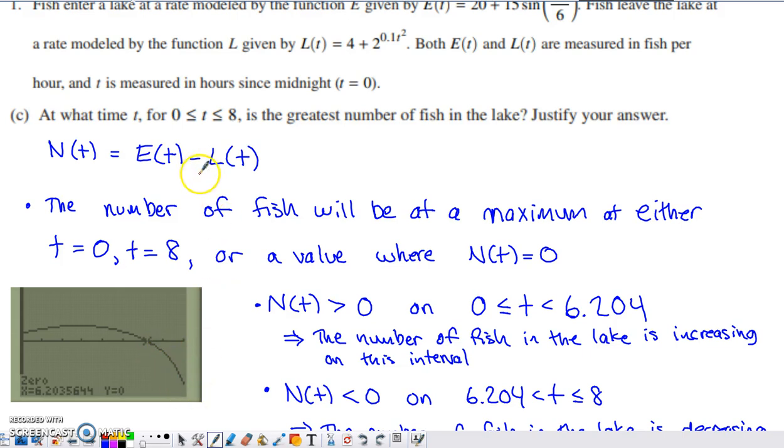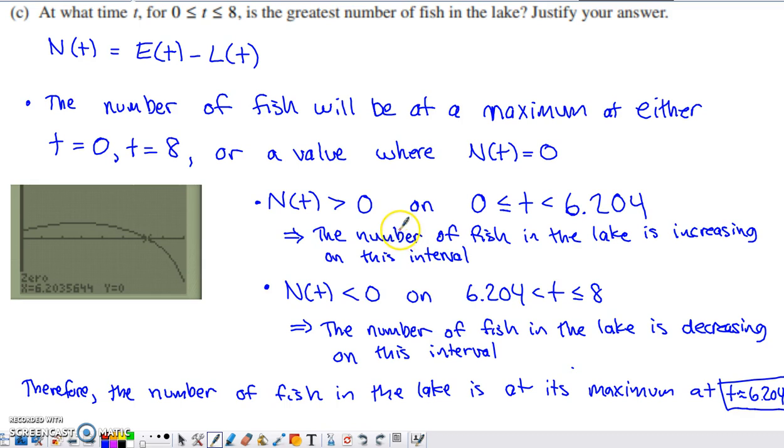So based on what we just said a few minutes ago, and I have it all kind of laid out within my written solution here as well, the number of fish in the pond is, or in the lake, is rising from time zero to this time right here where N(t) is equal to zero, and that time is 6.204 if I round that to three digits beyond the decimal. And then N(t) is less than zero, and the number of fish in the pond is decreasing from 6.204 the rest of the way to eight.